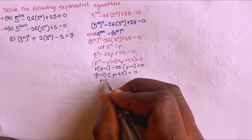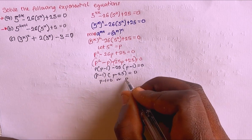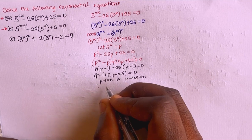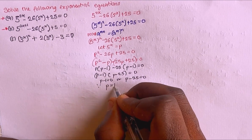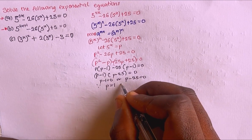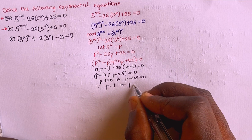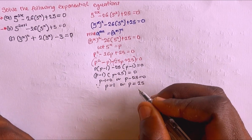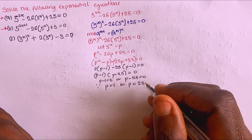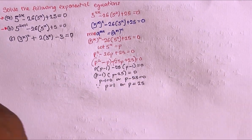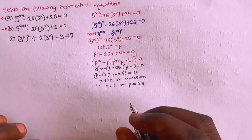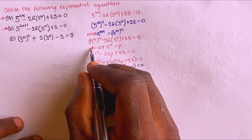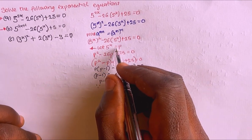So p minus 1 equals 0, or p minus 25 equals 0. Therefore p equals 1, or p equals 25. I'm not going to stop here because that's not the final answer — p represents something.